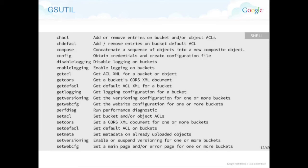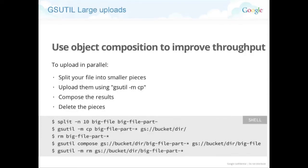The Python package is also available online. Here are the main functions — just to give you an idea of what gsutil can do. Like perfdiag, which is useful to see if performance is good between you and cloud storage. Object composition: you split your big file. That's convenient when uploading hundreds of megabytes, terabytes, or more. You do a multi-part upload running in parallel with a defined number of threads, then it composes the parts into a big file, and at the end you delete the parts. That's one way to upload very large amounts of data.